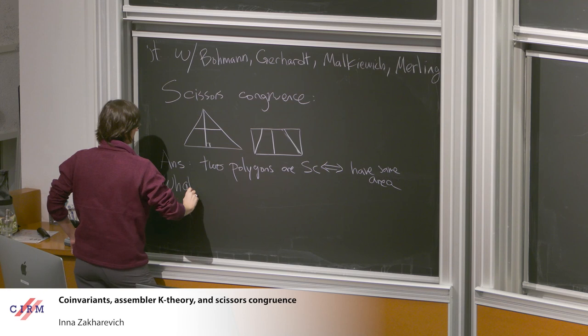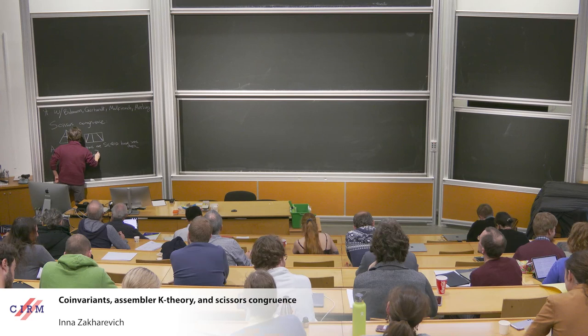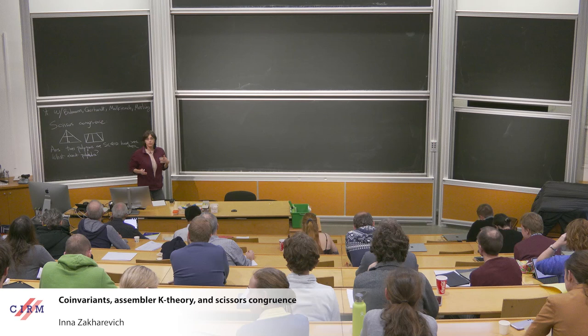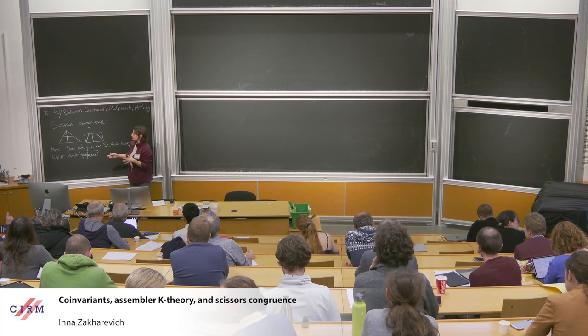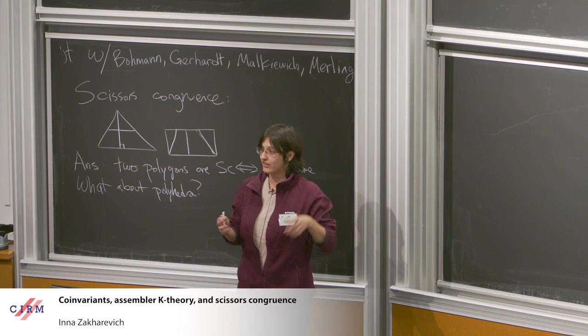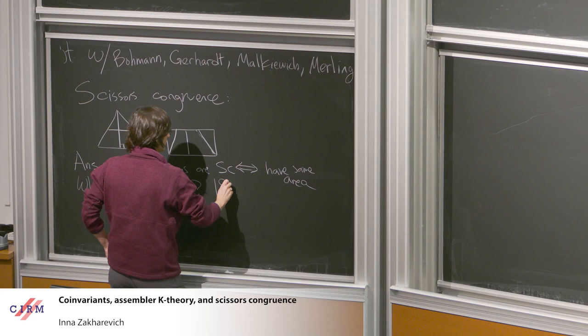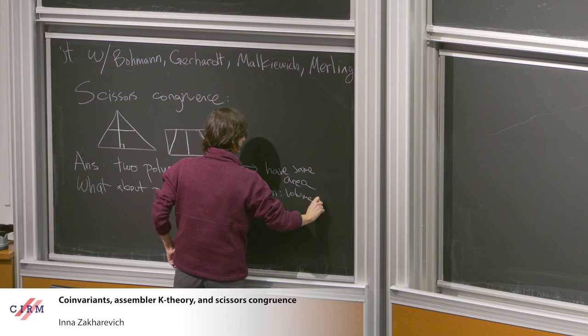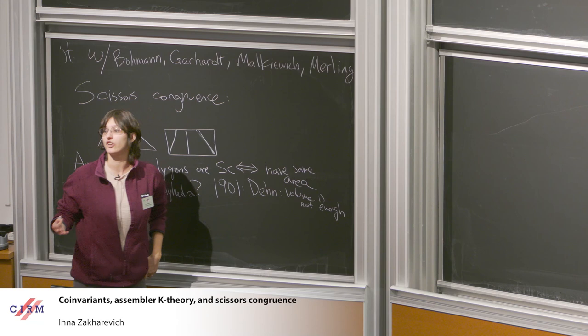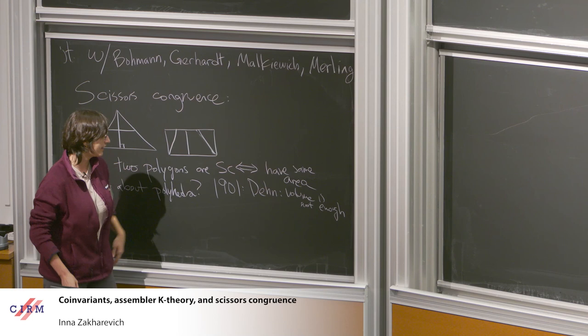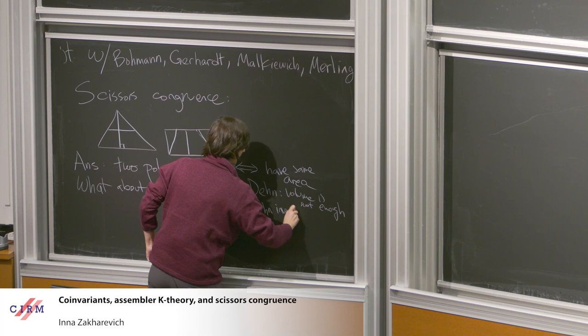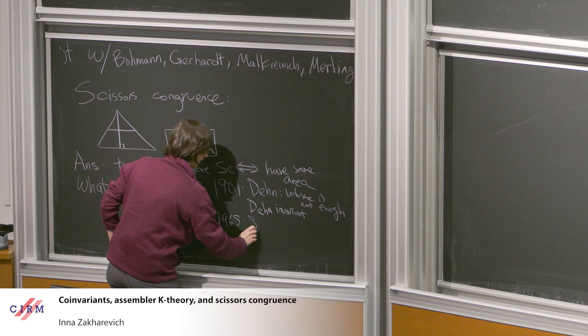What about polyhedra? For polyhedra it's more difficult. The angles in polyhedra are much more complicated because now you have two flavors of angles: ones at the vertices and ones at the edges, and the edge ones have length associated with them. In 1901, Dehn showed that volume is not enough. He constructed a second invariant on polyhedra preserved under cutting — we now call it the Dehn invariant. Then in 1965, Sydler showed these two invariants are enough.